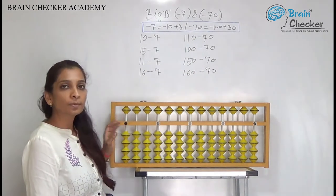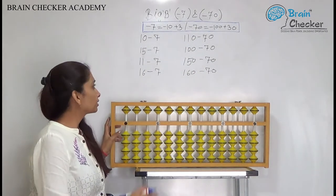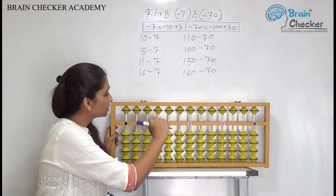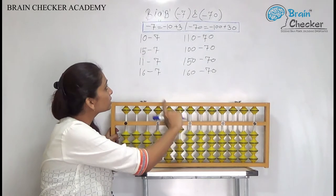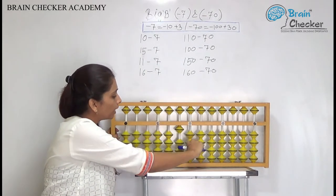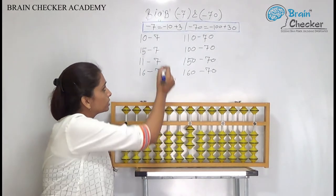Now how to implement this formula? Let's see that. The first example is 10 minus 7. So again on the 10 start we will take the 10. To minus 7, what is the formula? Add 3 less 10. So the answer is 3.